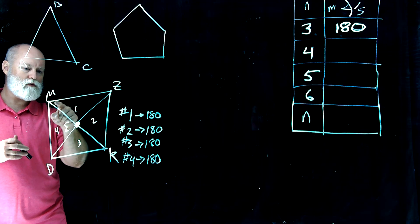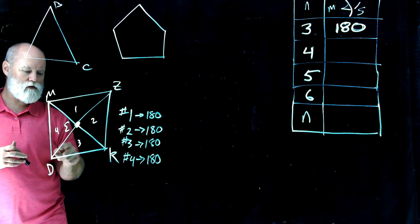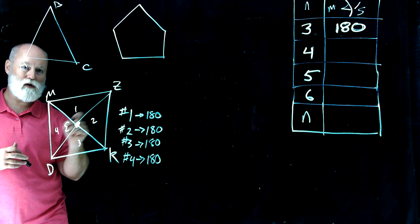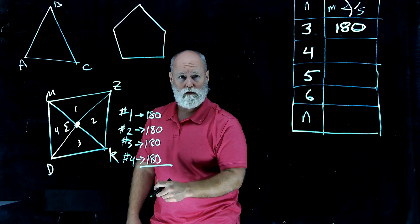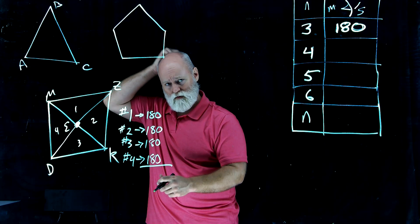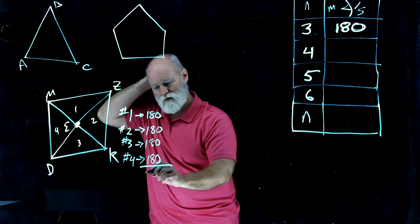So one, two, three, four, five, six, seven, eight, nine, ten, eleven, twelve. All twelve of those angles have a sum of 180 plus 180 plus 180 plus 180. Well, that's 360 and 360, which is 720.